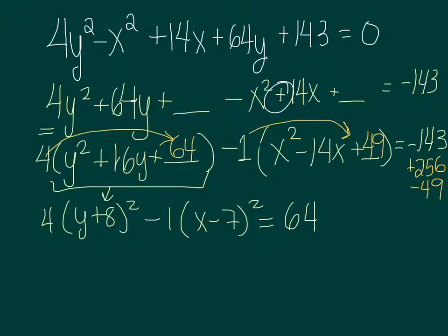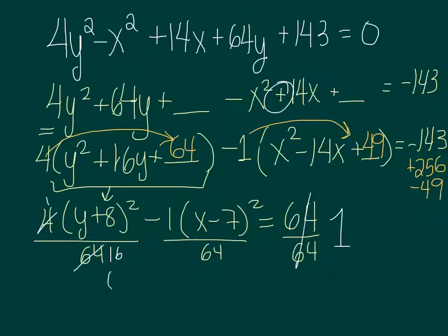Now remembering that my standard form always equals 1, I'm going to divide everything by 64. Divide by 64, and then I will go and simplify it, and this is going to be my final answer now. So the 4 and the 64, that's going to become 1 and 16. And then my 1 and my 64 are just going to stay the same. So my final answer will be y plus 8 squared over 16 minus x minus 7 squared over 64 equals 1.